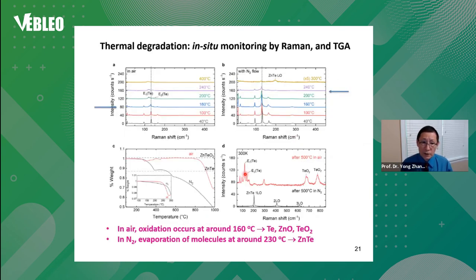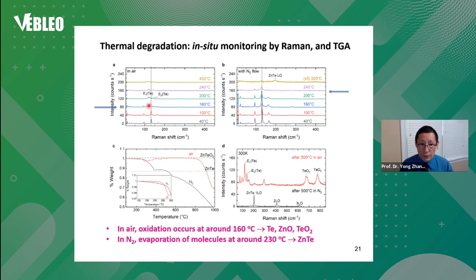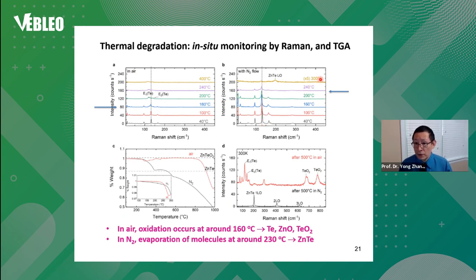The other analysis we did was thermal degradation monitoring by in-situ Raman spectroscopy and TGA measurement. In air, when increasing temperature, the hybrid modes start to disappear around 160 degrees C, and telluride-related side bands appear. By 200 degrees C, you cannot see the hybrid peaks anymore. In nitrogen it is very different — you can see the hybrid modes all the way to 300 degrees C, although at high temperatures zinc telluride modes appear, but not the telluride modes. So under different environments, the material degrades differently.